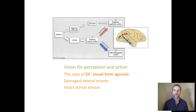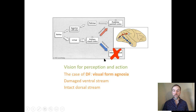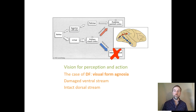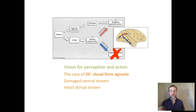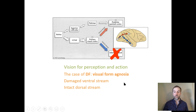First up is DF. She has what we call visual form agnosia. The damage to her brain is to the destination of her ventral stream — she has damaged her inferotemporal cortex. Her what abilities are basically destroyed, but her how abilities, which lie in the dorsal stream, are preserved. Agnosia means 'without knowing': she does see things — she's not blind — but she sees them without knowing what the visual form is.